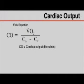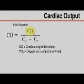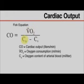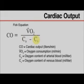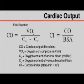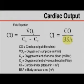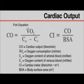Several additional values can be calculated using data obtained from the catheter. Cardiac output can be calculated with the Fick equation. The variables include VO2 (oxygen consumption), CA (oxygen content of arterial blood), and CV (oxygen content of venous blood). The cardiac index equals cardiac output divided by body surface area (BSA). For details about how to perform these calculations, see the supplementary appendix accompanying this video, available at NEJM.org.